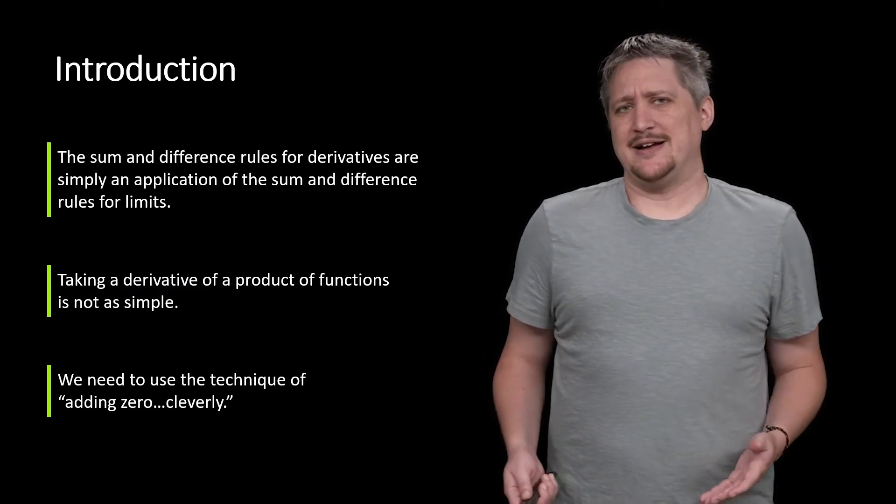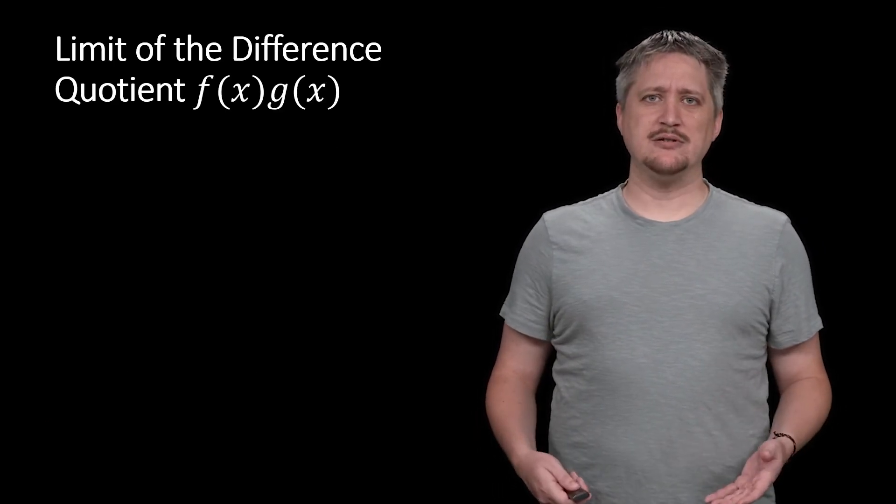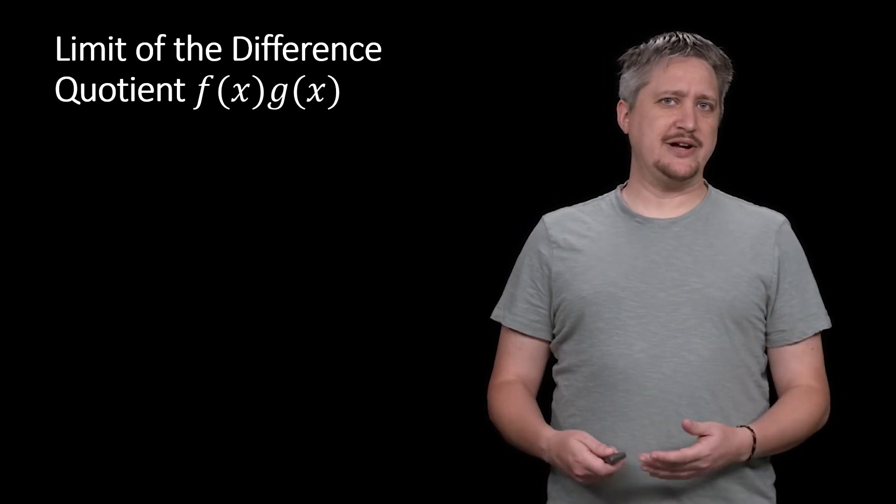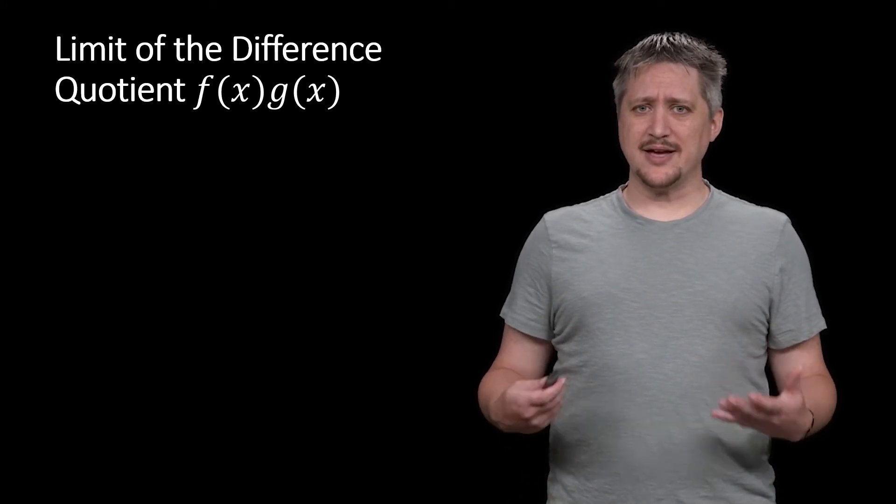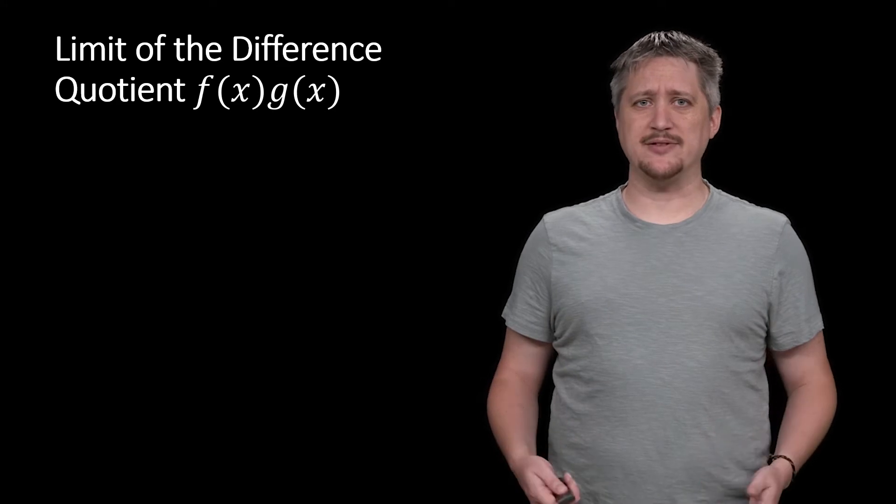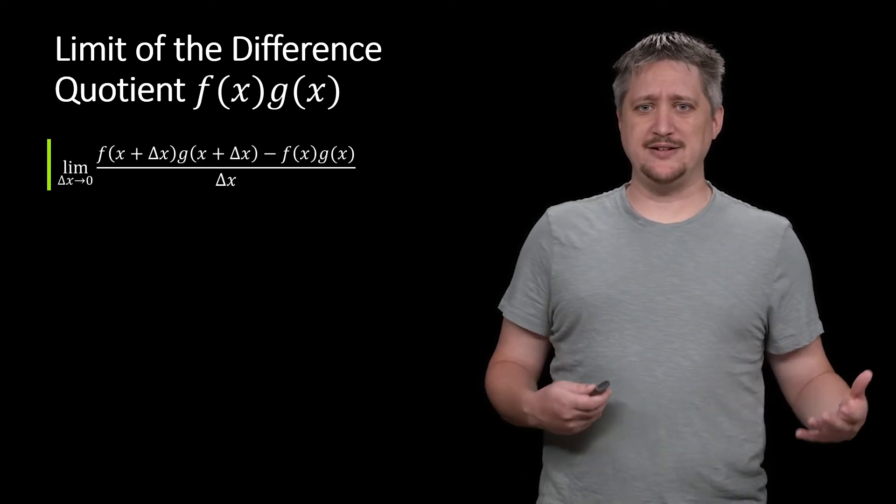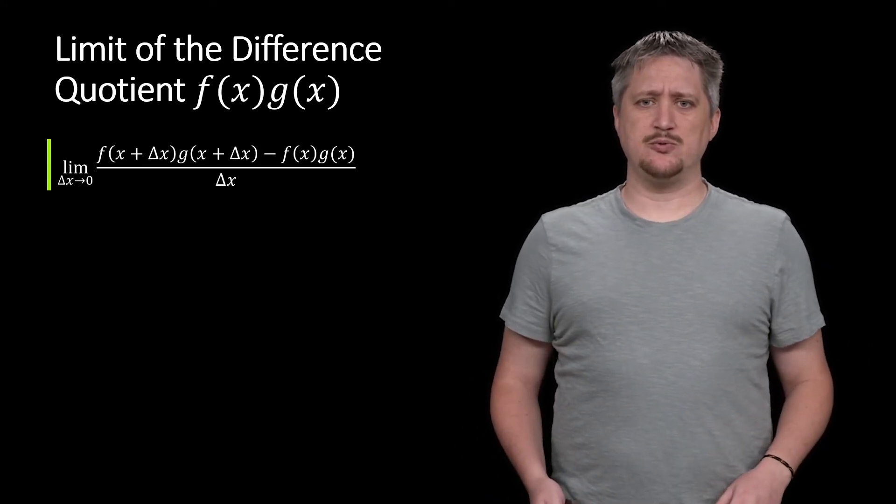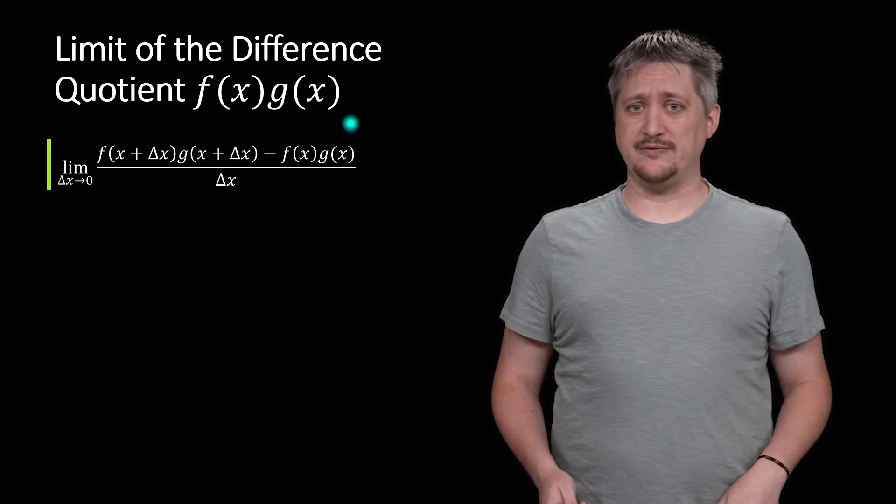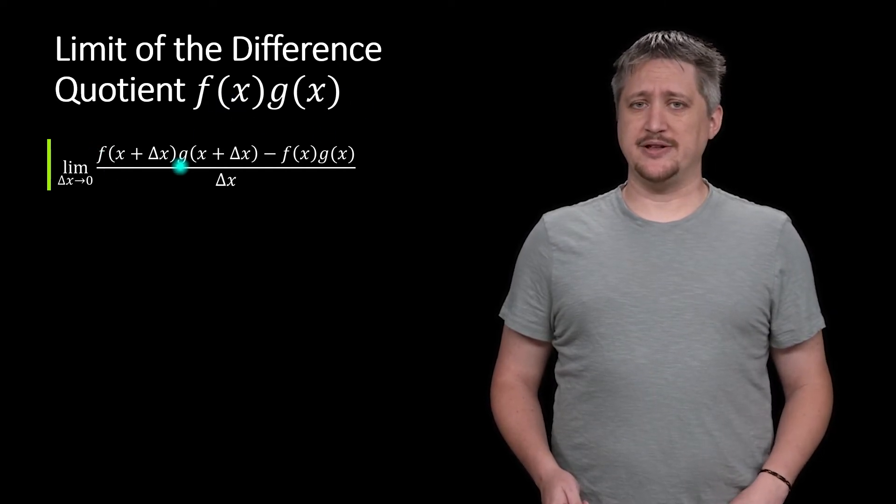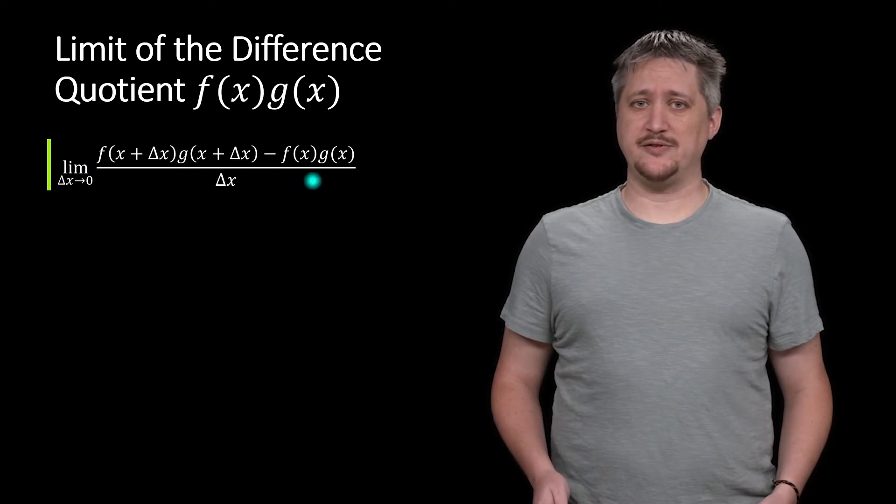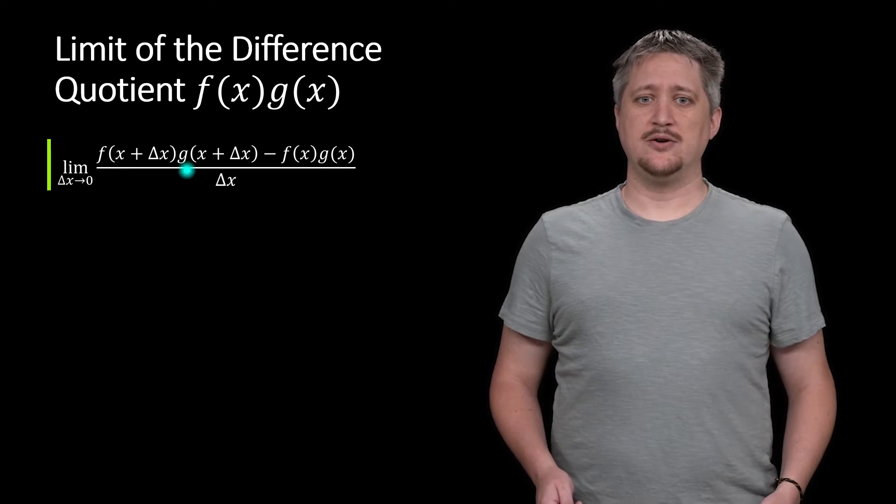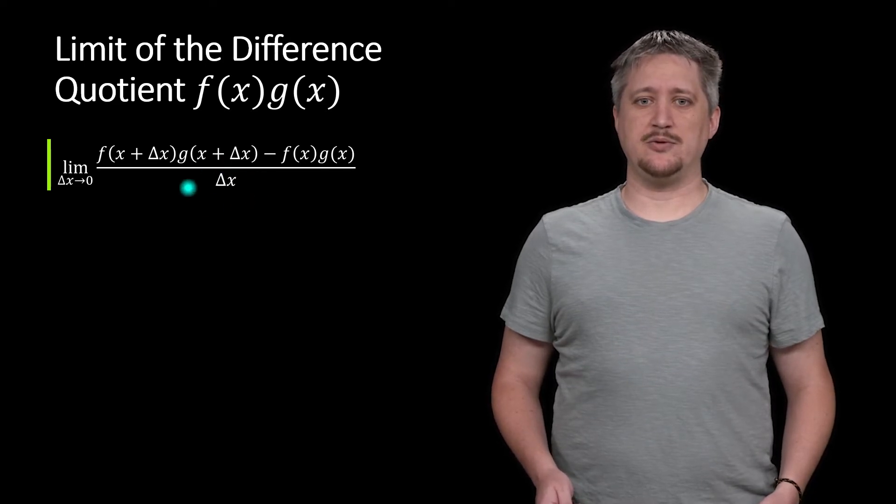As usual, as a good place to start, we can just write down what we're after using the difference quotient and see what happens. So if we naively plug this thing in, we're looking at the function f(x) times g(x), then we plug in the x plus Δx piece for both, minus that specific x value, and then we have it all over that Δx as Δx goes to 0.